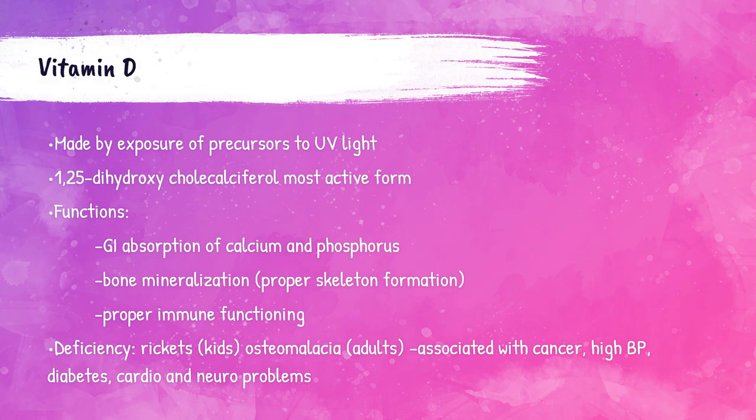Vitamin D, or cholecalciferol, is a fat-soluble vitamin that helps the absorption of calcium and phosphorus in the gastrointestinal tract. It helps the immune system and is essential for the mineralization of bones. When children have a deficiency of vitamin D, it causes a condition called rickets. When adults have a deficiency of vitamin D, it can cause softening of the bones, called osteomalacia. Both of these conditions are associated with an increased risk of cancer, hypertension, diabetes, cardiovascular issues, and neurological problems.